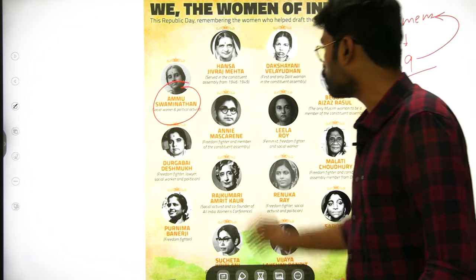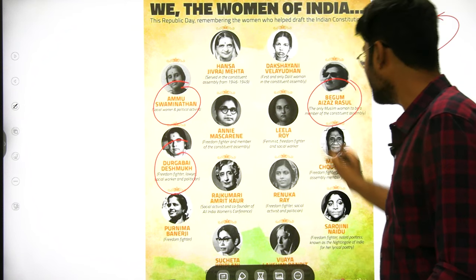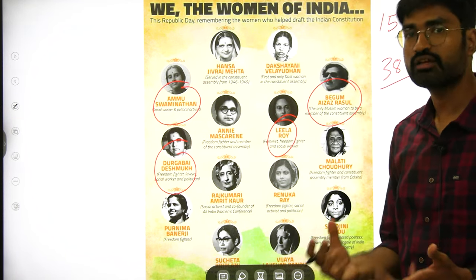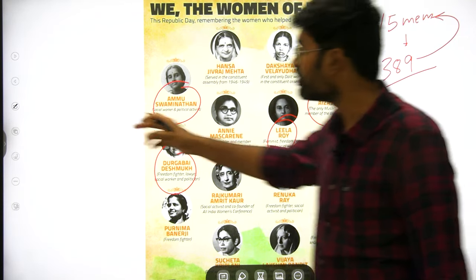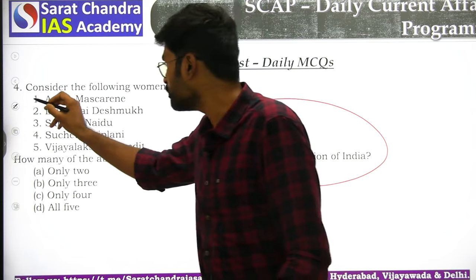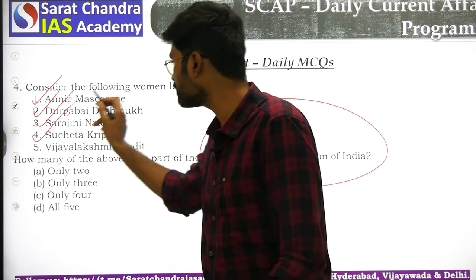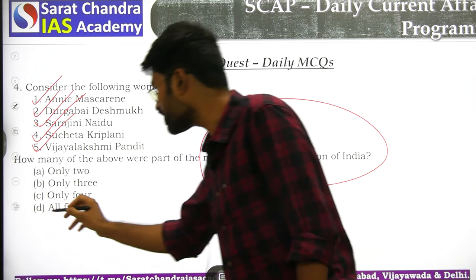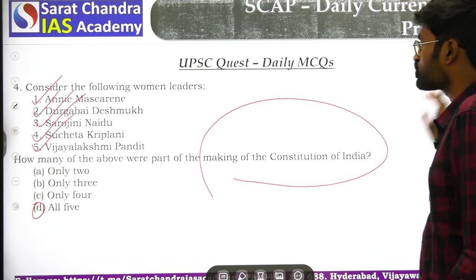Major women members of the Constituent Assembly include: Ammu Swaminathan, Durga Bai Deshmukh, Begum Aizaz Rasul, Leela Roy, Renuka Ray, and Sucheta Kriplani.